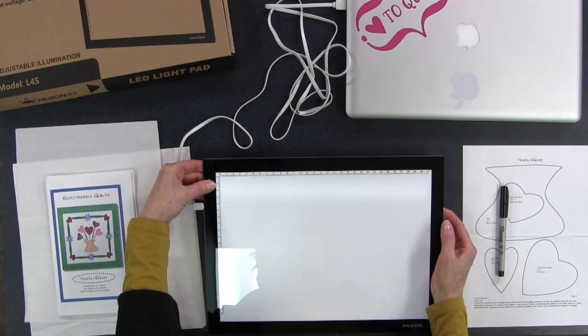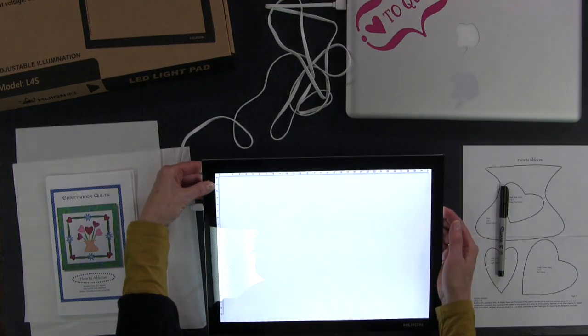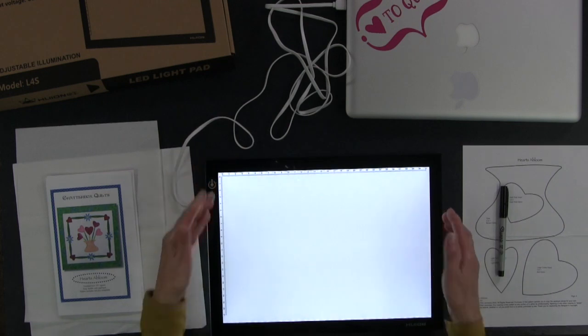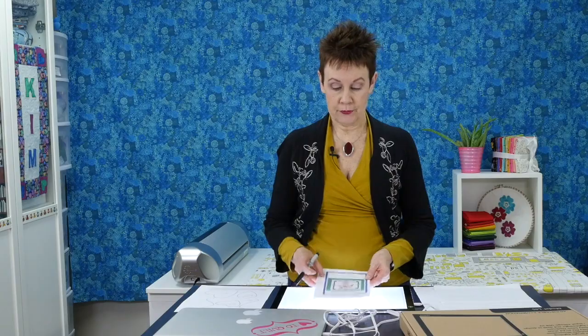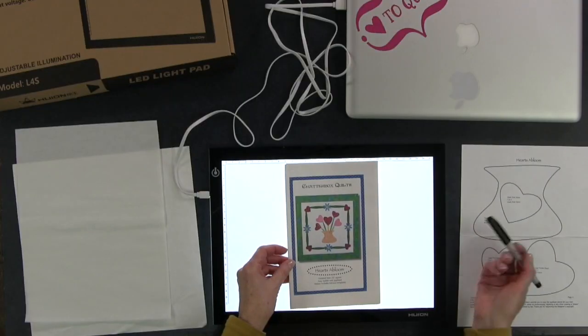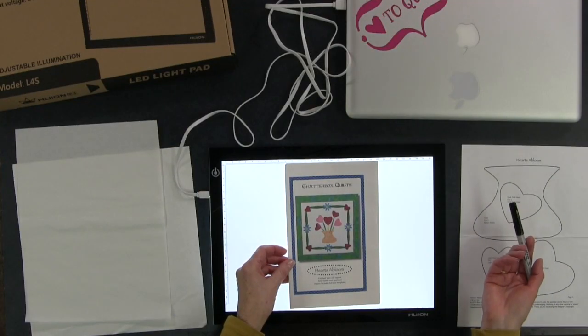To use it, after I've plugged it into my computer, I can just press here and the longer I hold it, the brighter it gets. That's about as bright as it's going to get, which is pretty bright. I'm using my Hearts of Bloom pattern right now to show you how I would trace onto my fusible web.